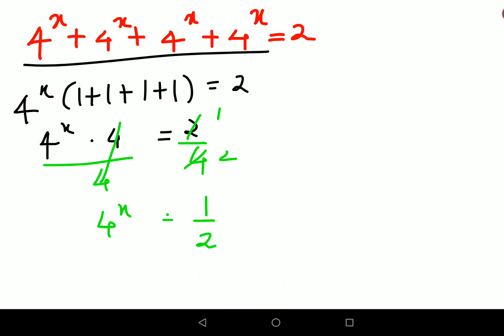Now understand we will try to write both of them in terms of 2. So this can be written as 2 raised to 2x and this 1 upon 2 can be written as 2 raised to minus 1.